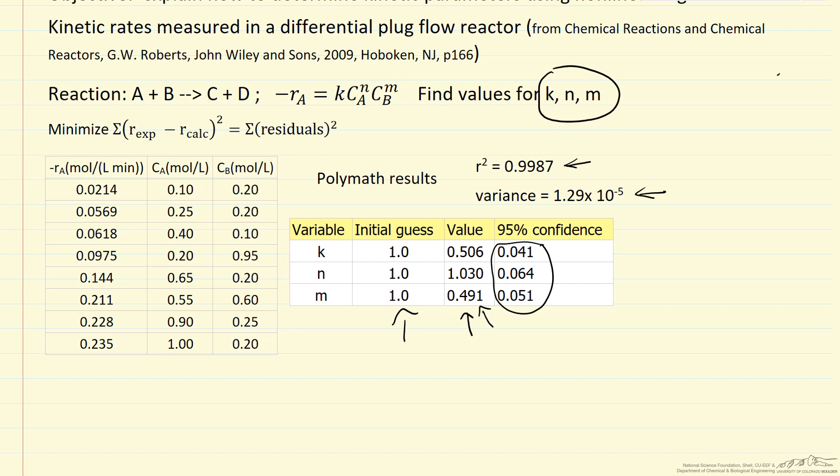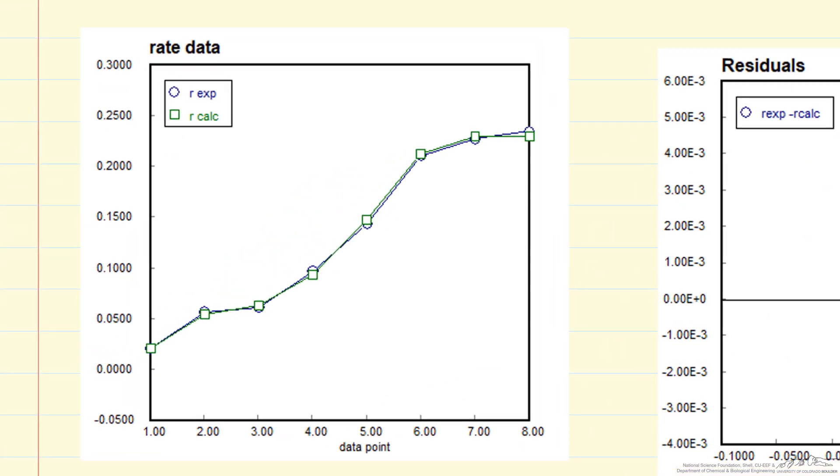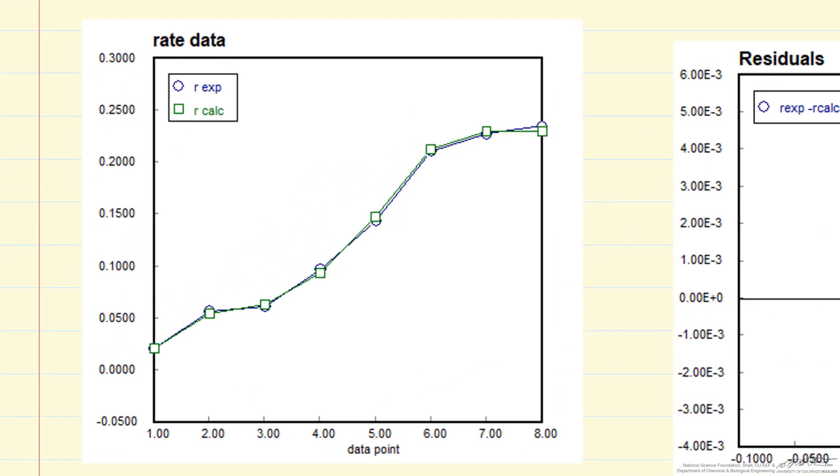We can also look at a plot to compare the values. Let's bring up that plot that's also generated by polymath. I'm looking at two plots here. On the left, the rate data, comparing for each of the eight measurements the calculated value, measured value, and experimental value. You can see they're really pretty close.